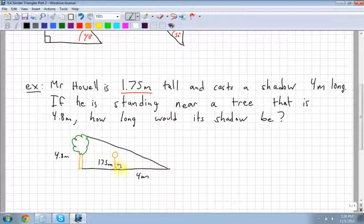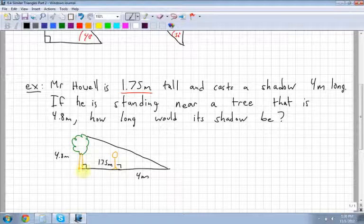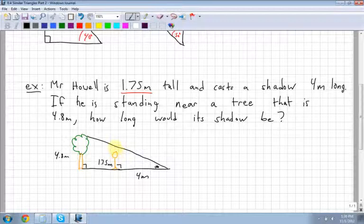So here I have a right angle. Here I also have a right angle. This angle down here is the same for both of these triangles. And also, if you take into account me standing up here, I have an angle here, an angle there.